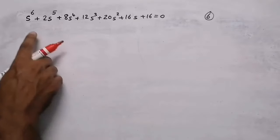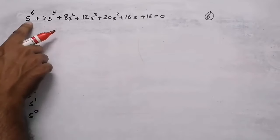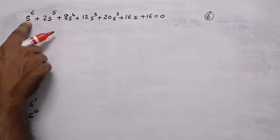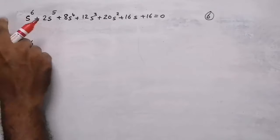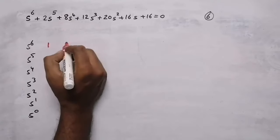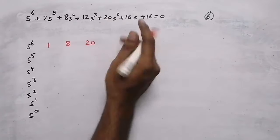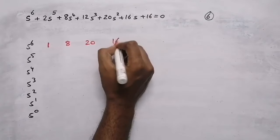The first row should contain elements of even powers. 6 is an even value, so it should contain the coefficients near powers of even values. The coefficient near s^6 is 1, near s^4 is 8, near s^2 is 2, and near s^0 it is 16.